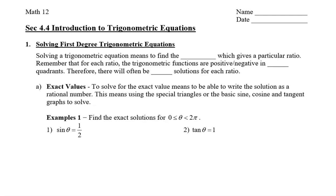The trig equations that we're going to take a look at today will all be solved, or most of them will be solved, where the angle is in radians. So, solving a trig equation means to find the angle which gives a particular ratio. Remember that for each ratio, the trig functions are positive and negative in two quadrants, so there will often be two solutions for each ratio. Now, let's take a look at exact values first, and then we'll take a look at approximate values after.